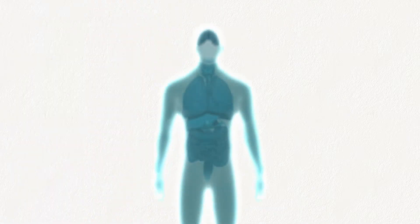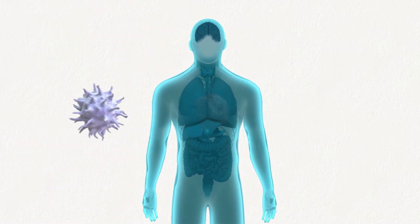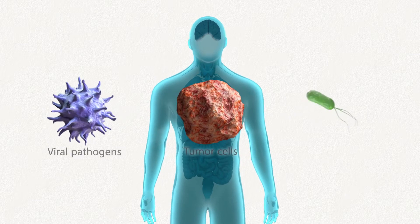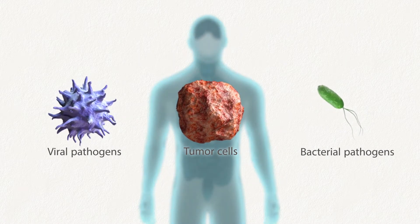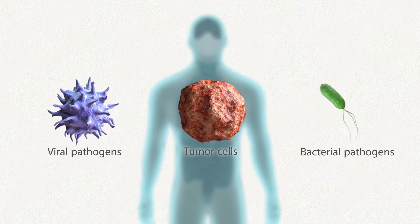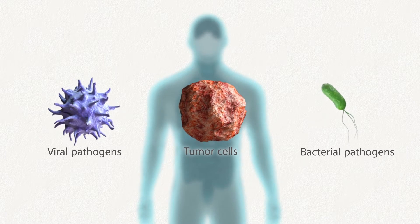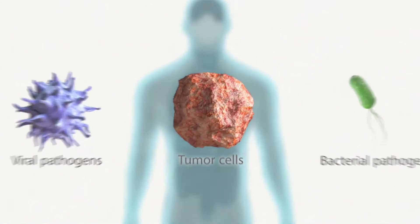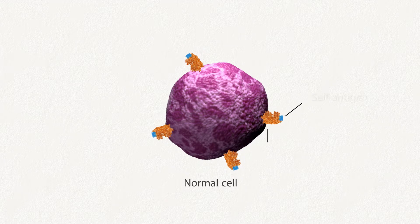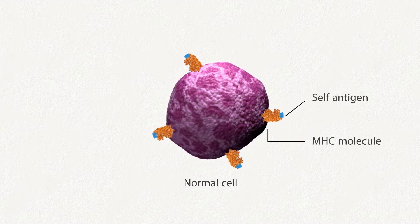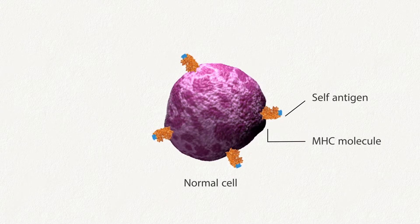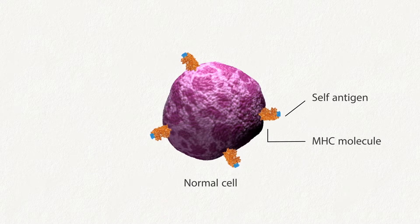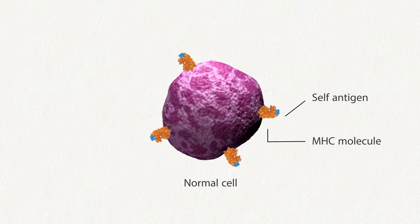The immune system is a network of specialized organs, tissues, cells, and signaling molecules that work together to defend the body. Classified as either self or non-self, antigens enable the immune system to distinguish between a normal interaction, self, and an encounter with a foreign threat, non-self.